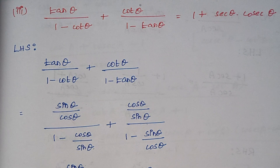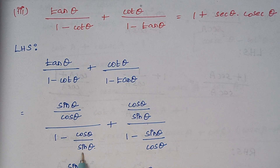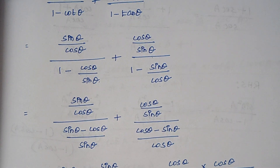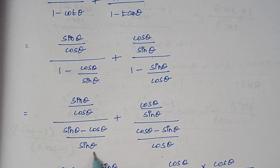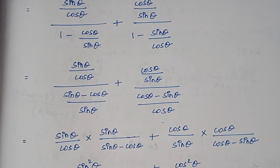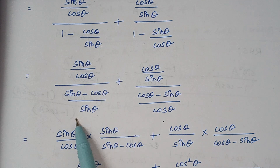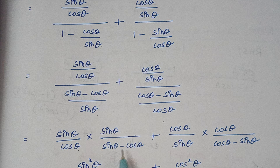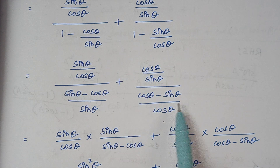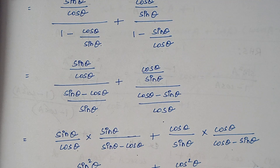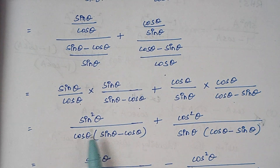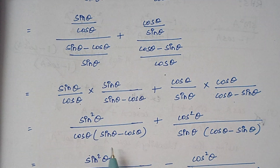The next step is we have to take LCM for the denominator part. For the first term: 1 minus cos theta by sin theta becomes sin theta minus cos theta over sin theta. For the second term: 1 minus tan theta becomes cos theta minus sin theta over cos theta. Moving the denominator to the numerator as a reciprocal gives sin theta by cos theta multiplied by sin theta over sin theta minus cos theta, and cos theta by sin theta multiplied by cos theta over cos theta minus sin theta. Multiplying gives sin square theta divided by cos theta times sin theta minus cos theta.